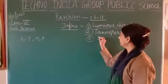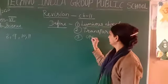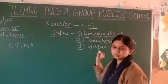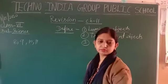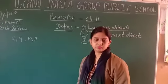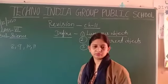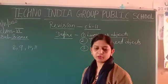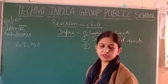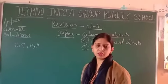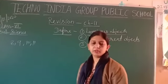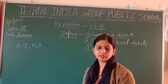Third definition: opaque. If we cannot see through an object, those are called opaque objects. Who will tell me the meaning of this definition? Sanjana, tell me the meaning of this definition.